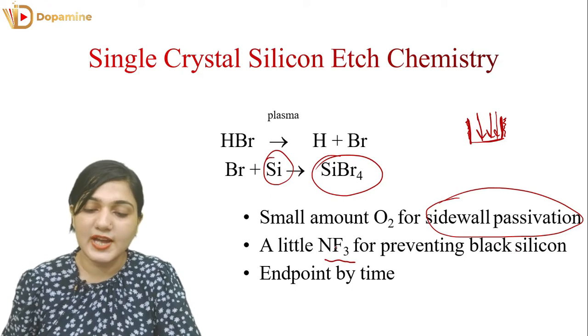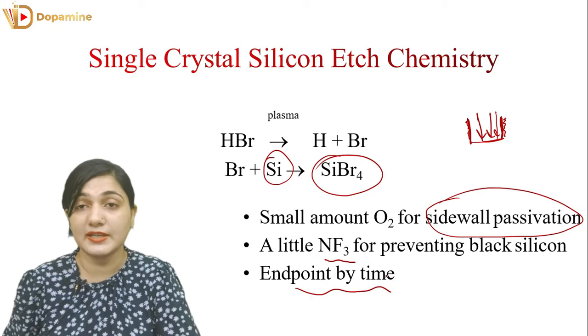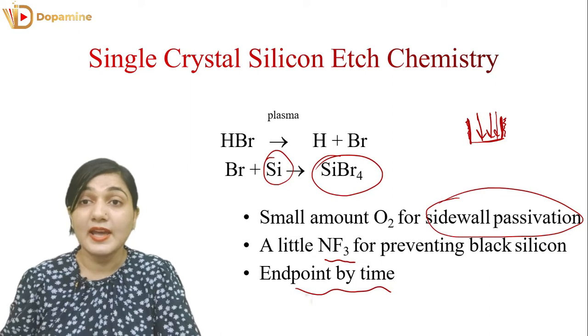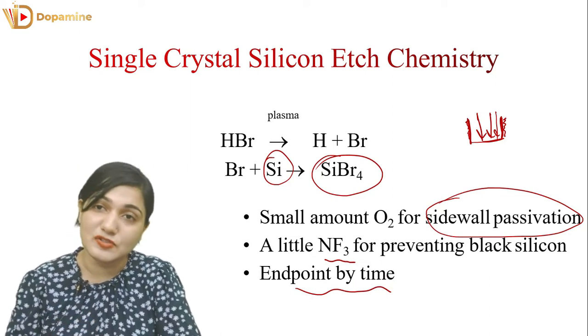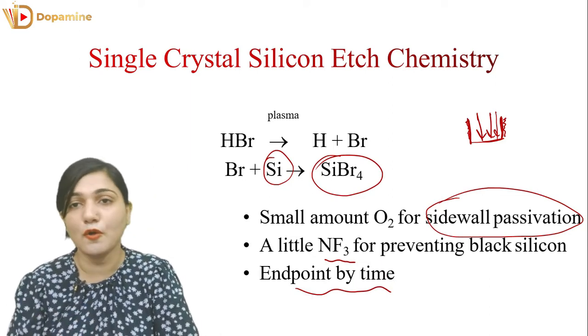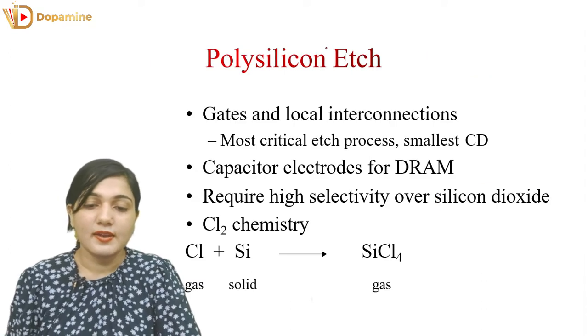To prevent black silicon formation, we use a little NF3. We also have to know the endpoint — how much time silicon will take to be consumed — and then we stop etching.